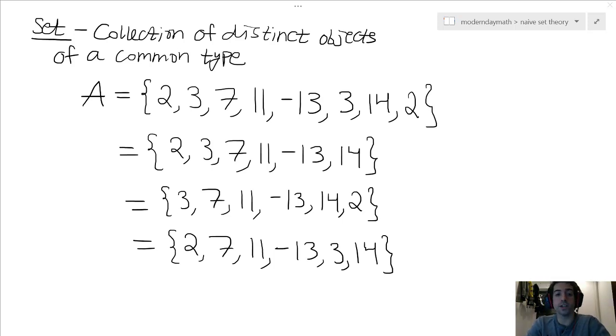Or 3, 7, 11, negative 13, 14, or even 2, 7, 11, negative 13, 3, 14. And there's other representations we could have, I just wanted to put emphasis on just how arbitrary order is with a set. It's just all about having that common type and that uniqueness.